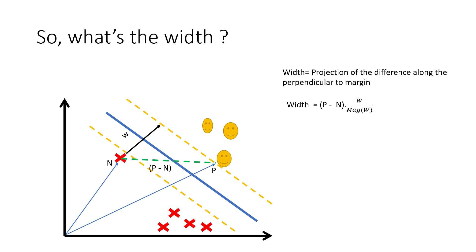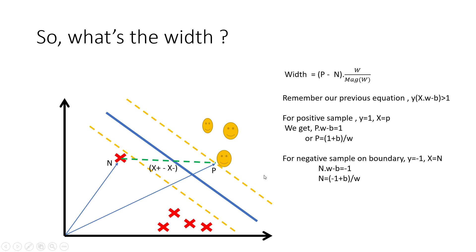We can simplify further using known equations for points on the margin boundary. For positive sample p (y = +1): p·w = 1 + b, so p = (1 + b)/||w||. For negative sample n (y = −1): n·w = b − 1, giving n = (b − 1)/||w||. Subtracting, p − n = 2/||w||, since the b/||w|| terms cancel. The denominator ||w|| also cancels with the numerator, giving the final result: width = 2/||w||.